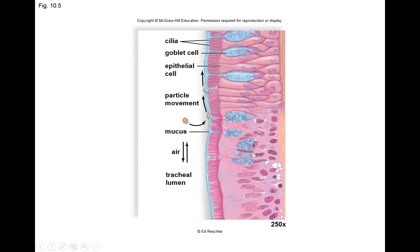We don't want the mucus to be too viscous — viscous refers to resistance to flow. Thick, sticky mucus is not good for clearing airways effectively, but a nice thin, slippery mucus is ideal. When people are sick, mucus production gets heavier, so it's important they drink fluids to thin that mucus out and allow the cilia to direct it toward the digestive tract.